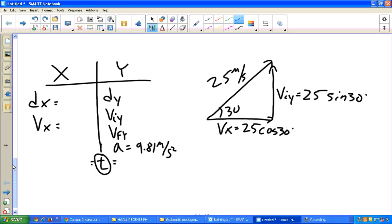And when you go ahead and do that, you get Vx equals 21.65 meters per second. And we know the sine of 30 is one-half, so Viy is 12.5 meters per second.